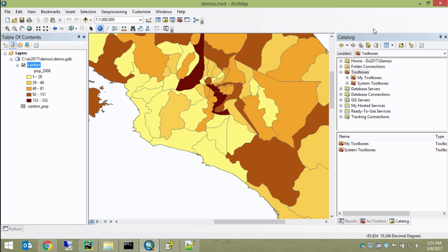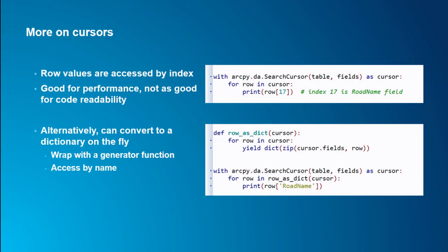One thing about cursors: the index-based access helps performance but hurts code readability. If you're willing to accept a small performance trade-off, you can wrap the cursor in a generator function that yields a dictionary each iteration, mapping field names to values, so you can access by field name instead of index. The performance loss is maybe around 20% — it's a trade-off between readability and performance. You either lay down code comments or do something like this.